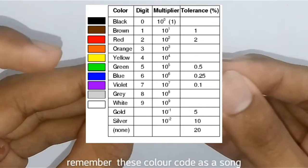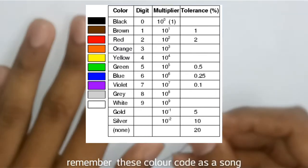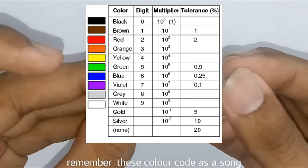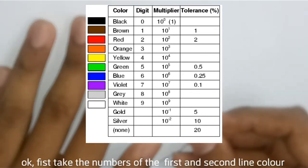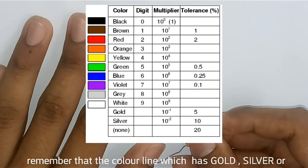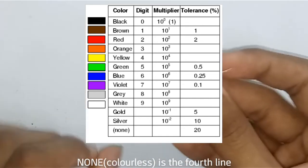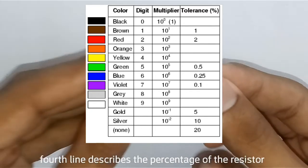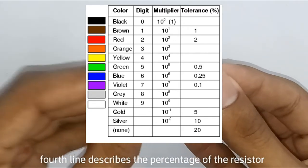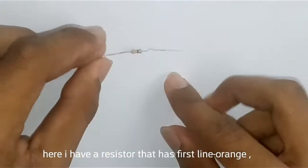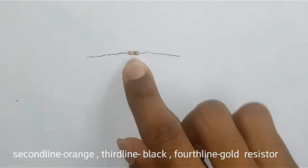This is the table. This is the color code. This will be added to the first line. This is the color code from the resistor. There are 3 lines, 2 lines, or 3 lines in the color code.